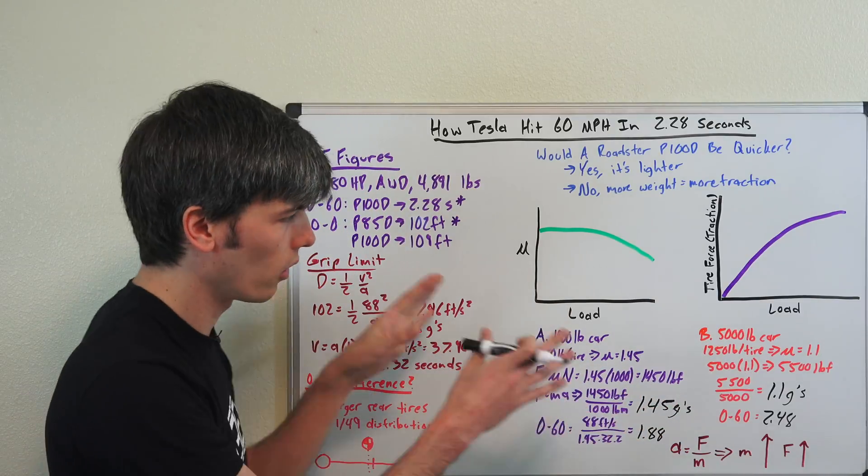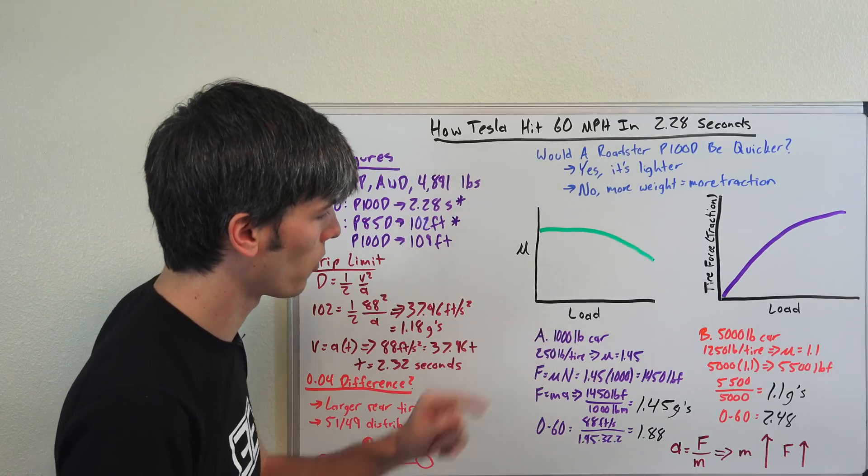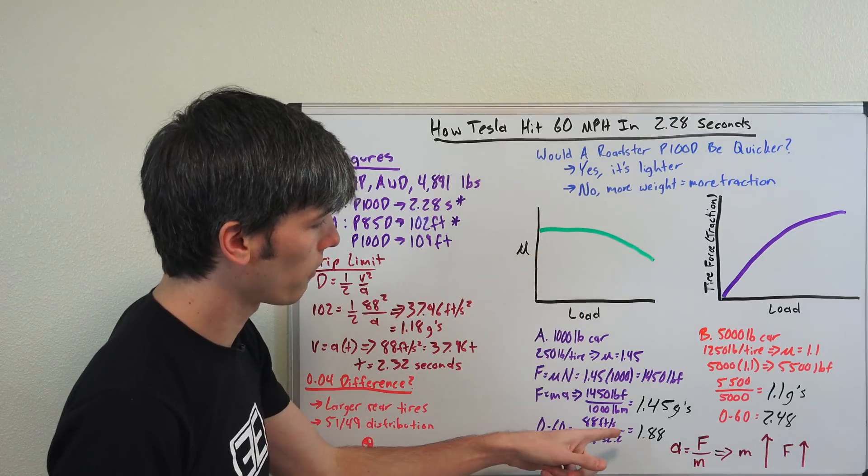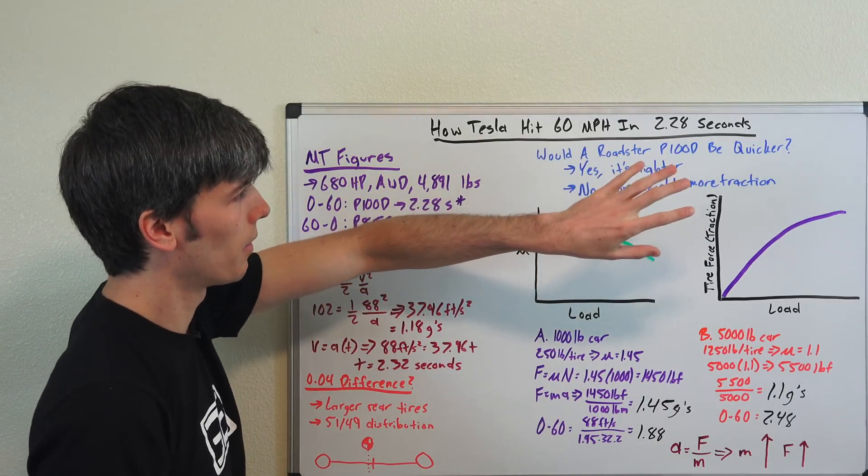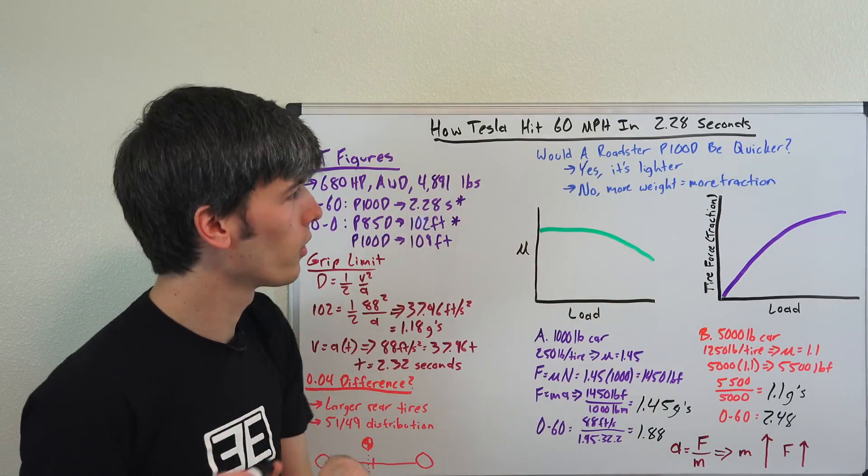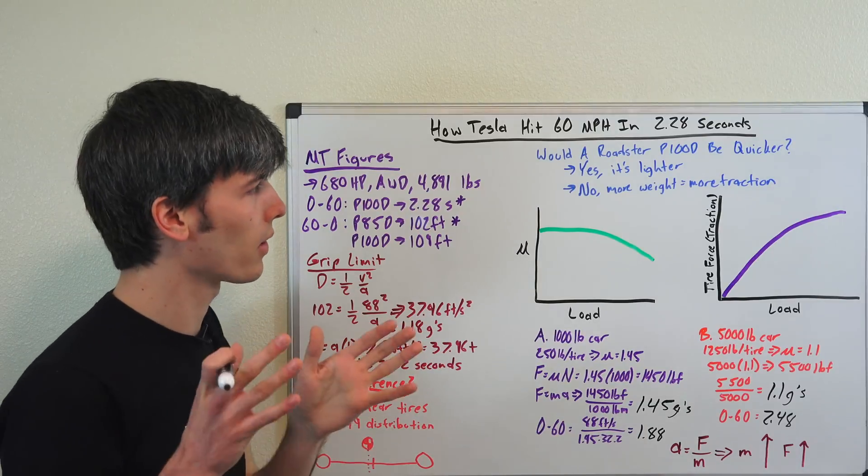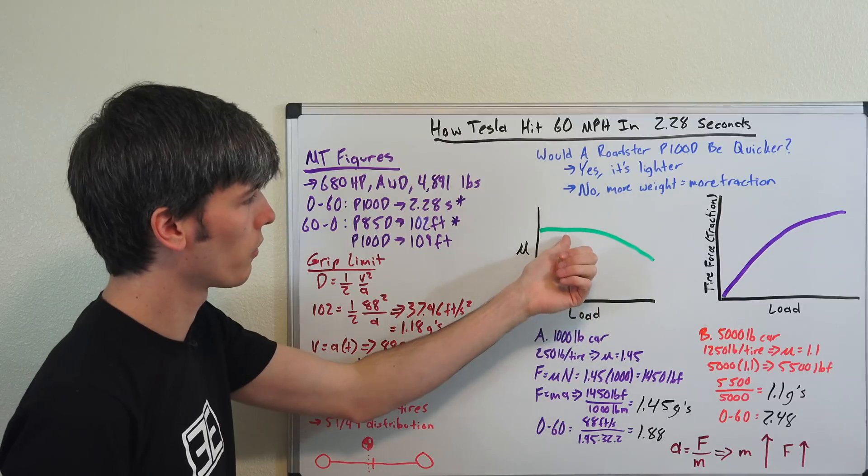So both of these cars have infinite power, the only thing holding them back is grip. And you can see that because this car weighs 4,000 pounds less, its coefficient of friction is higher and therefore it is able to accelerate faster. So yes, a Tesla Roadster fitted with a P100D, assuming it could keep its weight less than the P100D Model S, would be faster to 60 because the coefficient of friction would be lower.